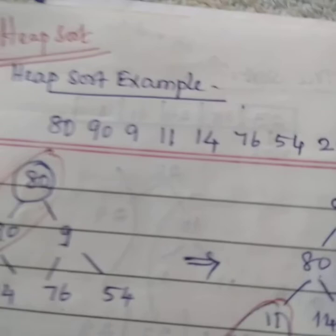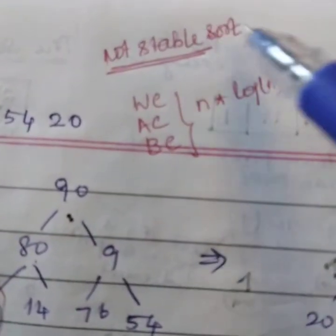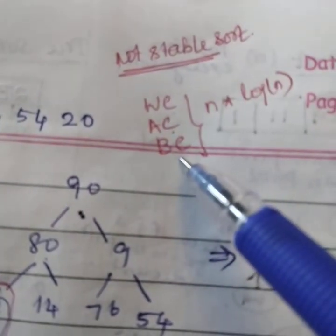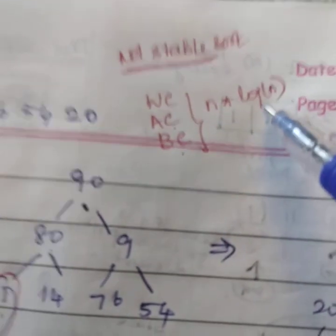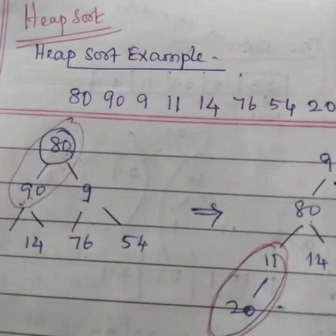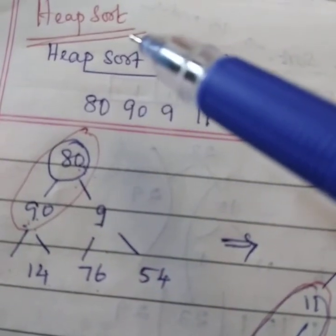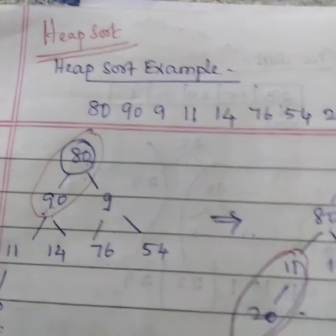That's all about this heap sort. It's a very interesting sort. It is not stable sort. Its worst case, average case and best case are order of n into log n. Usually, in linked list concepts, this sorting principle is being done. Thank you.